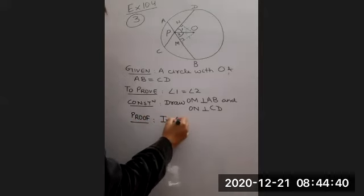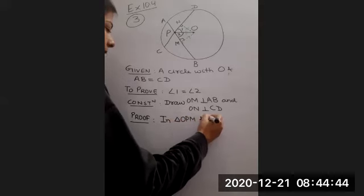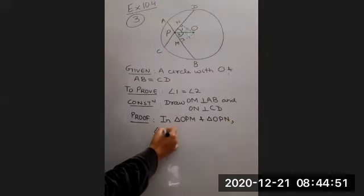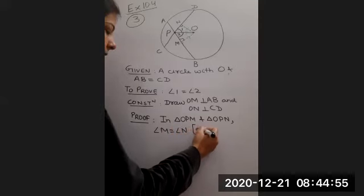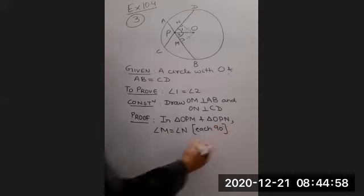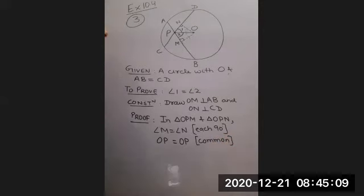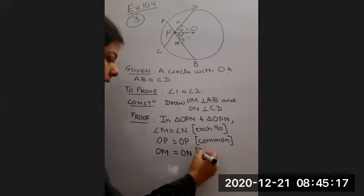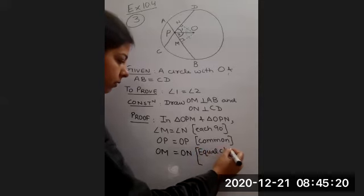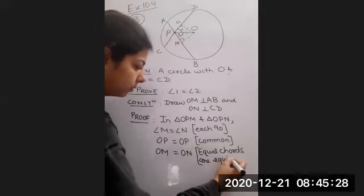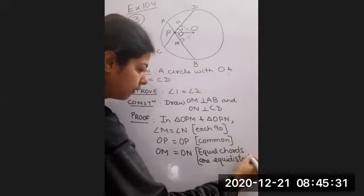In triangle OPM and triangle OPN, angle M is equal to angle N, each 90 degrees. OP is equal to OP, common. Then we have OM is equal to ON, and the reason will be equal chords are equidistant from the center.